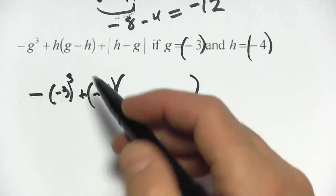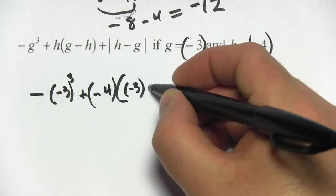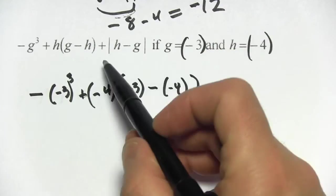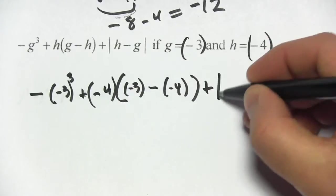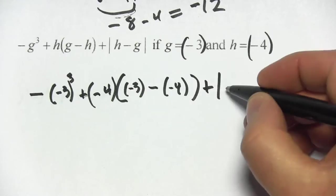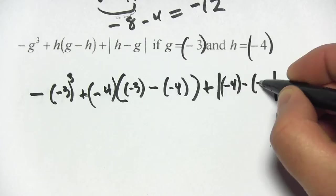And then a set of parentheses, so I'll leave some space here. Inside we have g minus h, so that's negative 3 minus negative 4. And we have a plus sign and then absolute value symbol, and inside the absolute value symbol we have h minus g, so that's negative 4 minus negative 3.